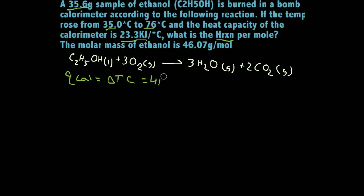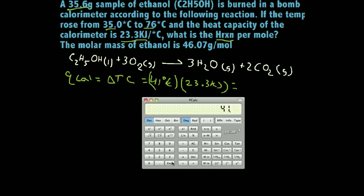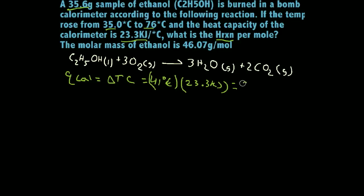So we've got 41 degrees Celsius times our heat capacity, which is 23.3 kilojoules. And that's going to be equal to, just plug that into our calculator here, 41 times 23.3. 955.3 kilojoules. Right? Because this is actually 23.3 kilojoules per degree Celsius. We've got to write that in. And these degrees Celsius are going to cancel out. We'll be left with kilojoules.